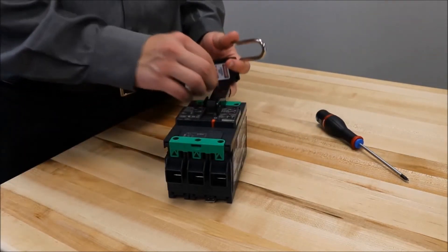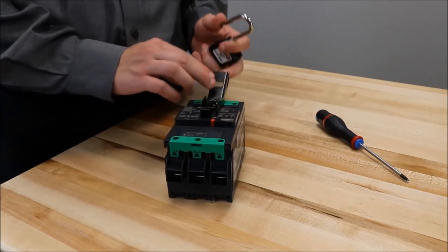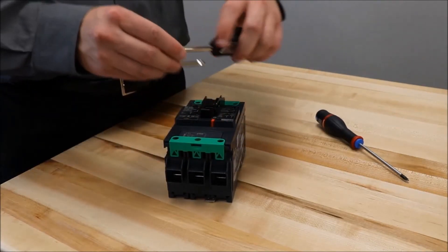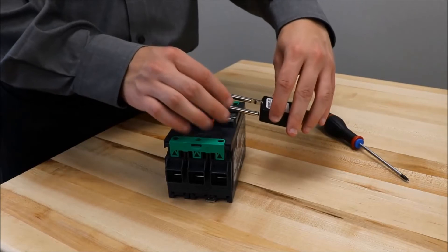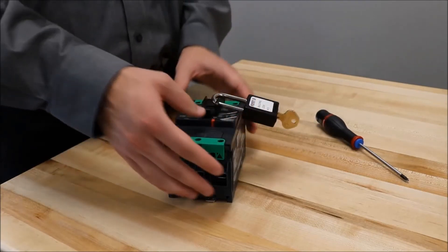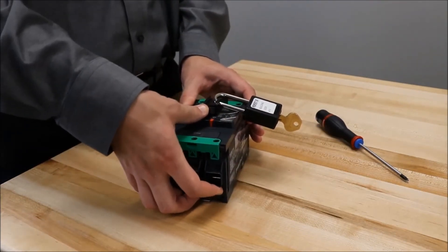When the handle is in the off position, it blocks it so that once the padlock is installed and locked, it cannot be turned into the on position.